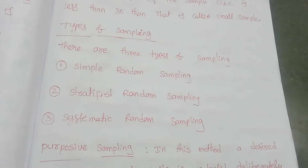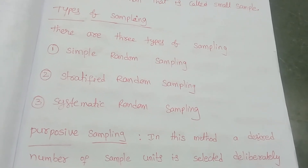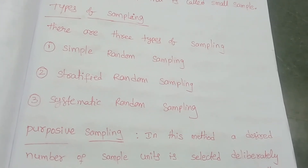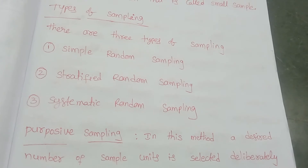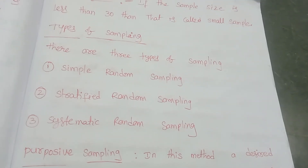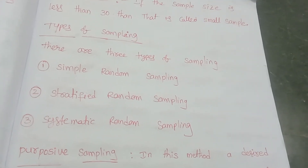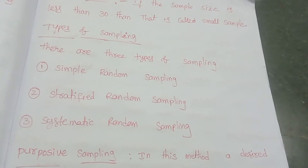Next, coming to types of sampling. Generally we have three types: first is simple random sampling, second is stratified random sampling, and third is systematic random sampling.